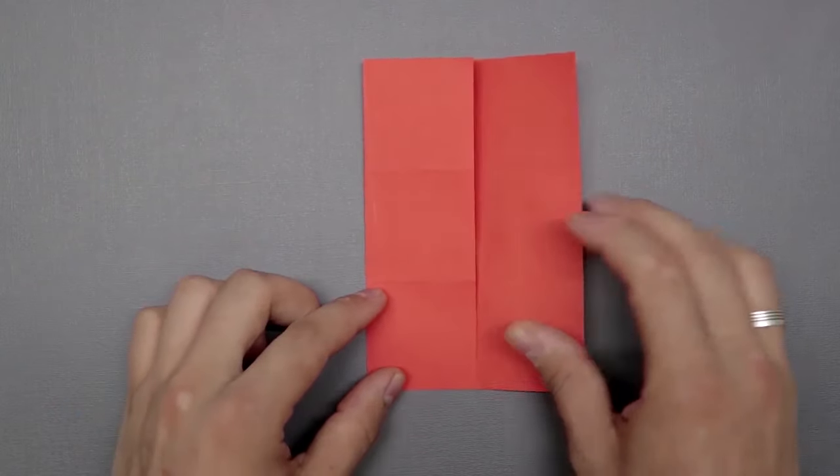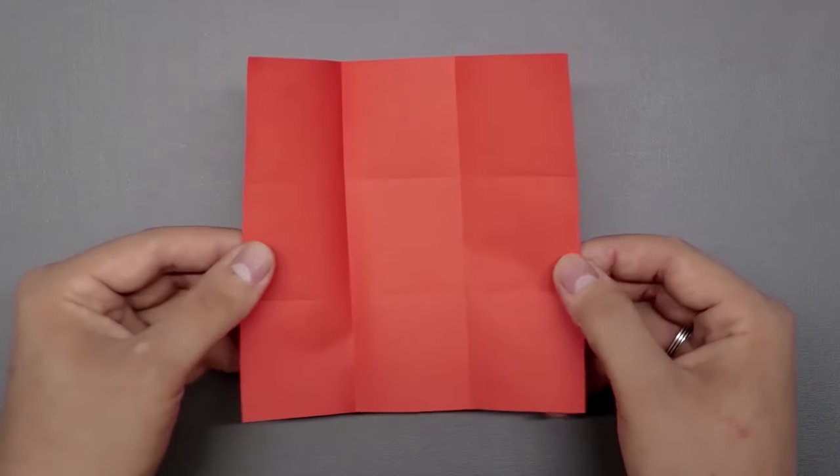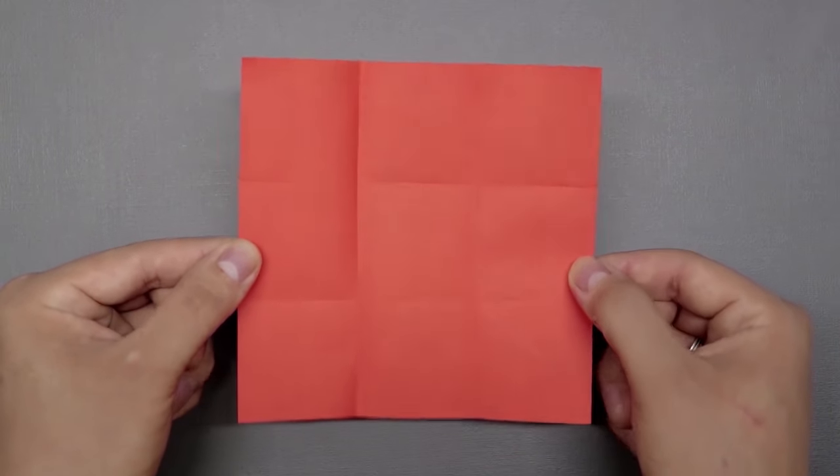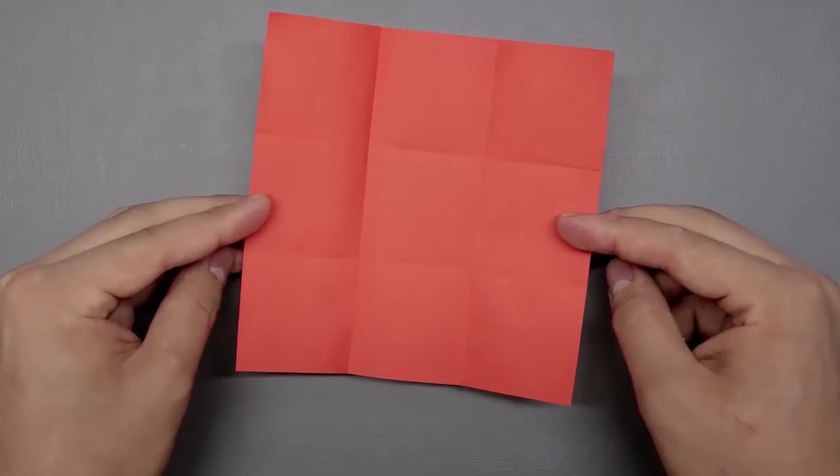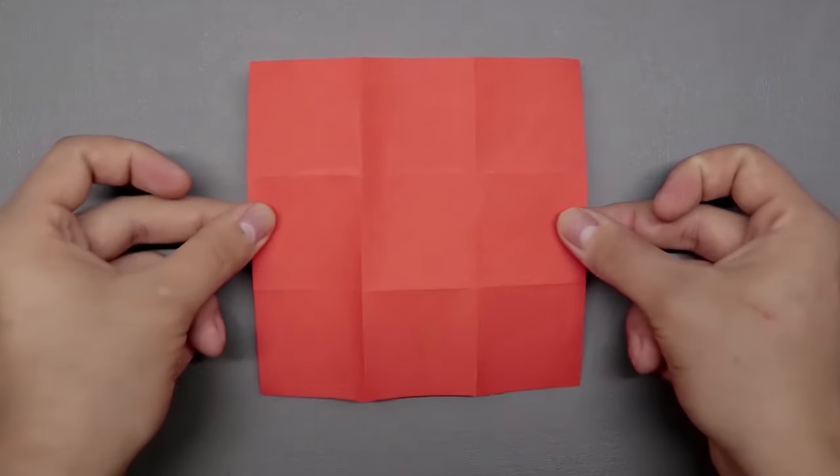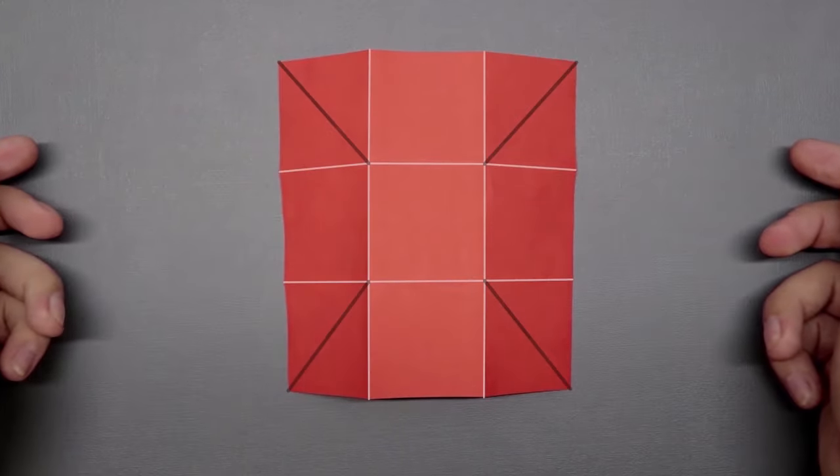With that, the square is divided into 9 smaller squares. For the next step, we need to turn it over and divide 4 squares of the corners in half, diagonally.